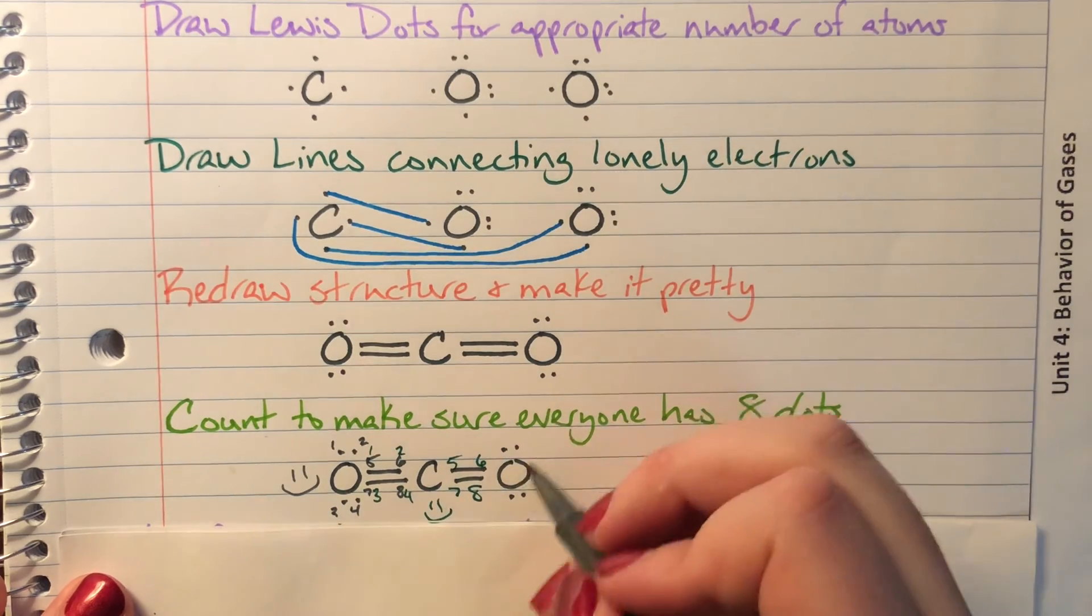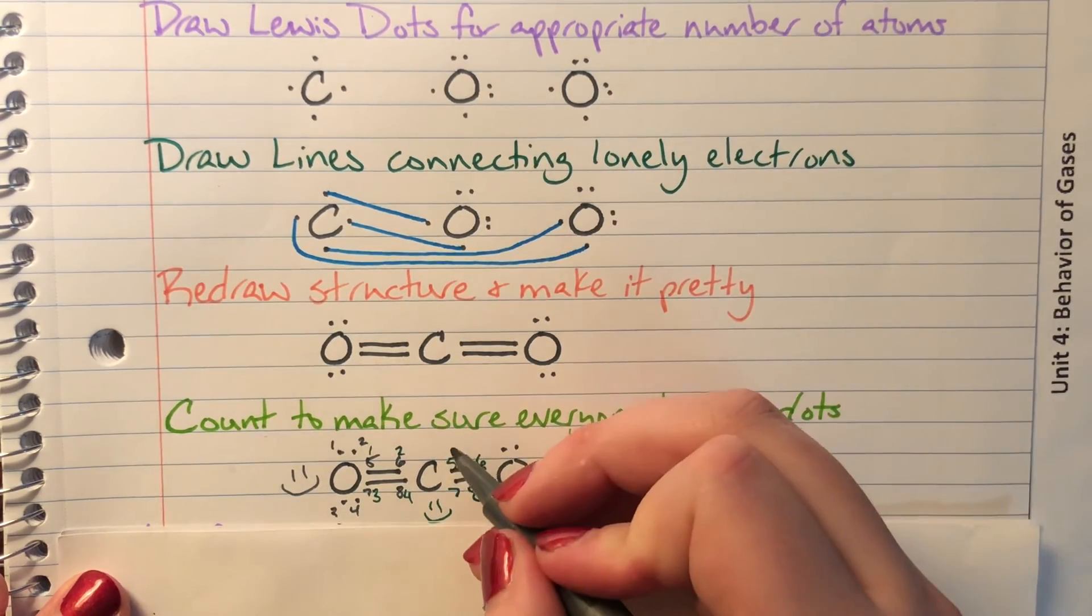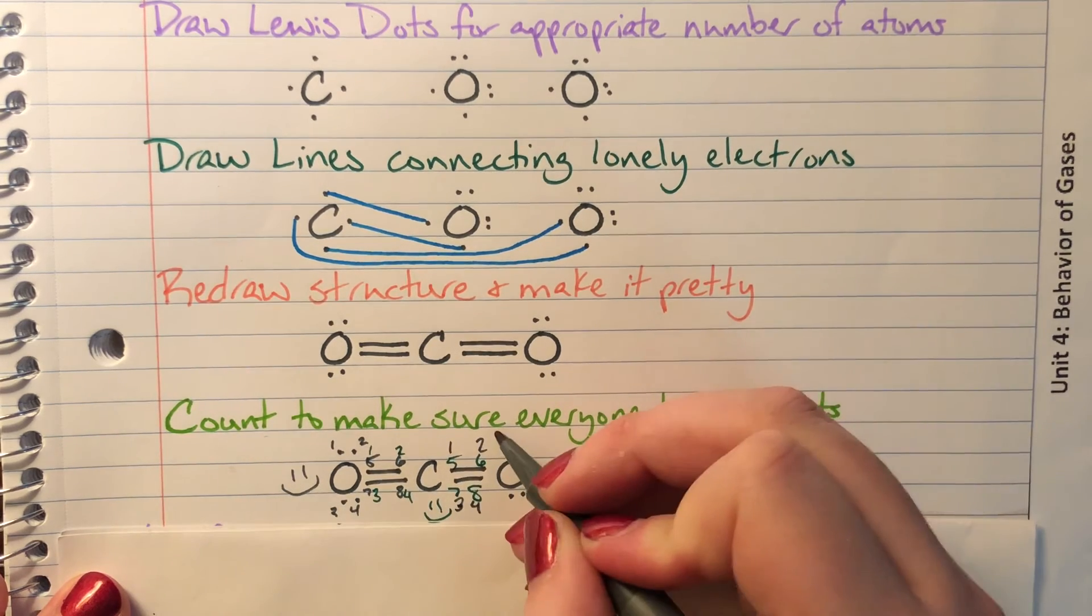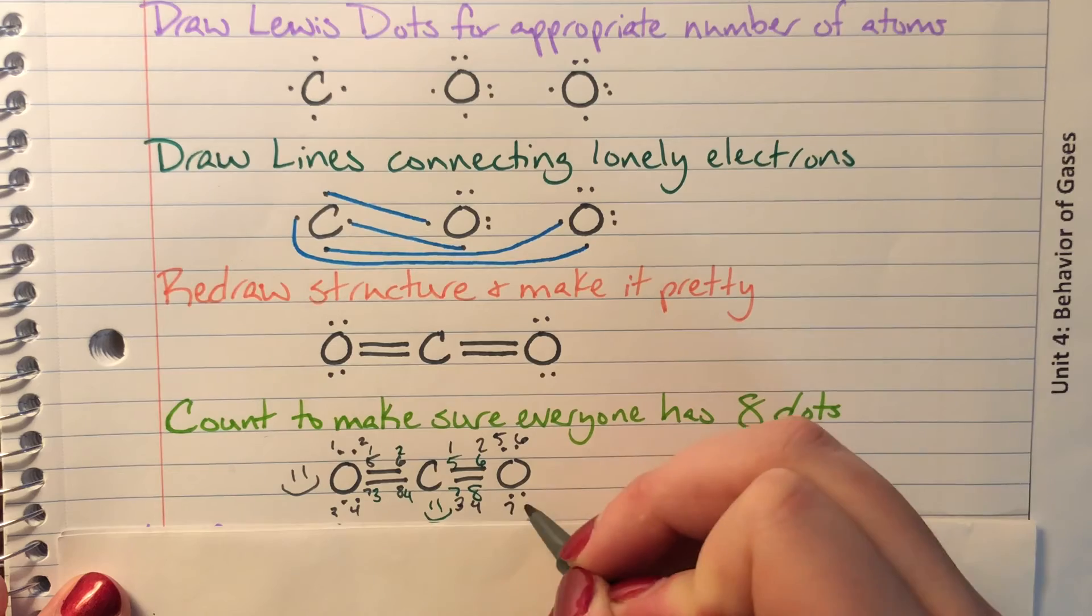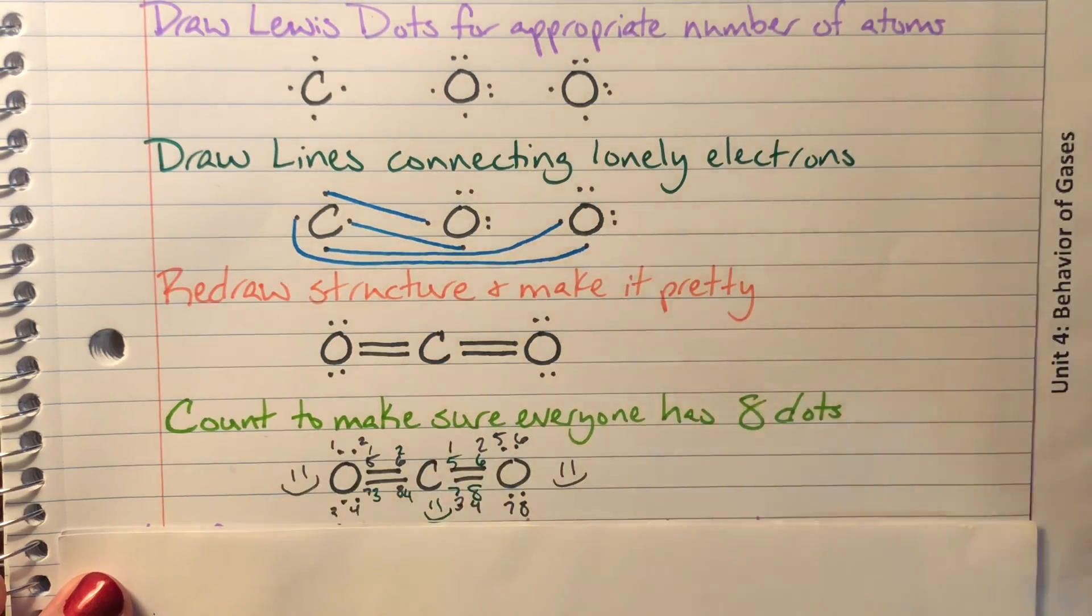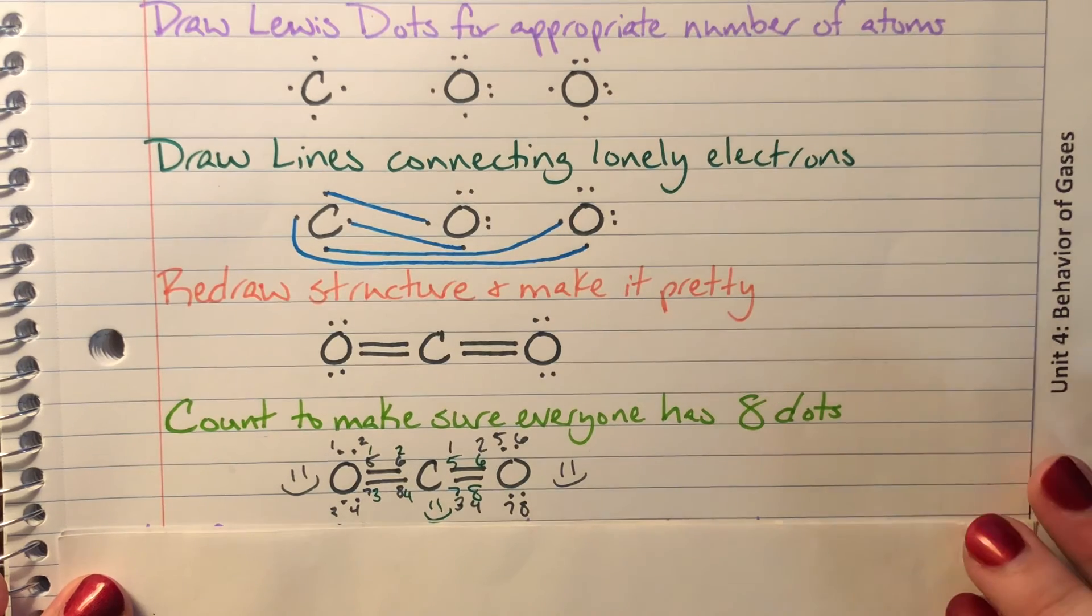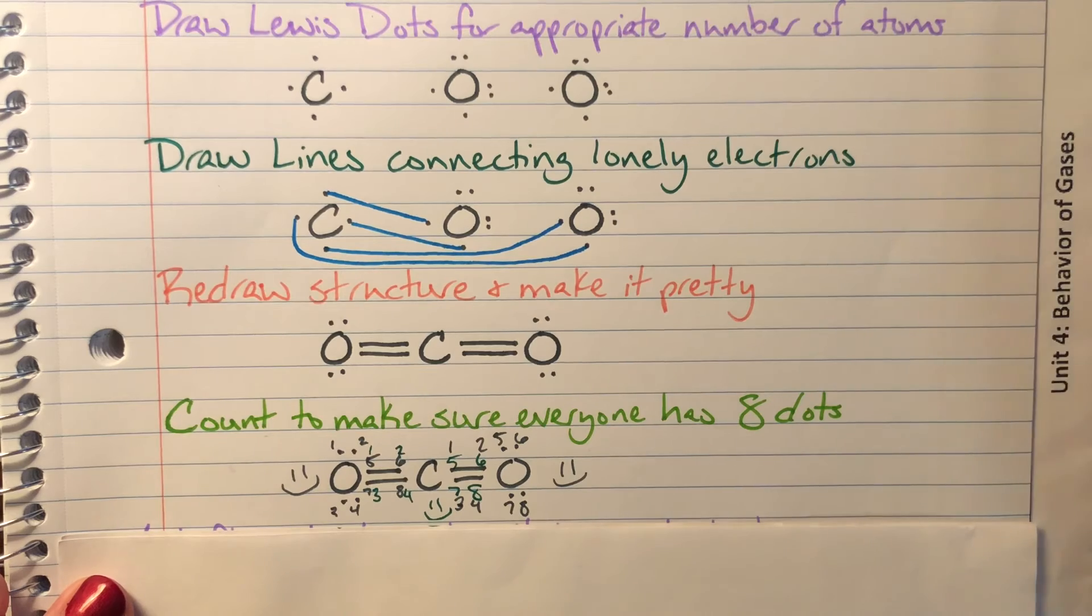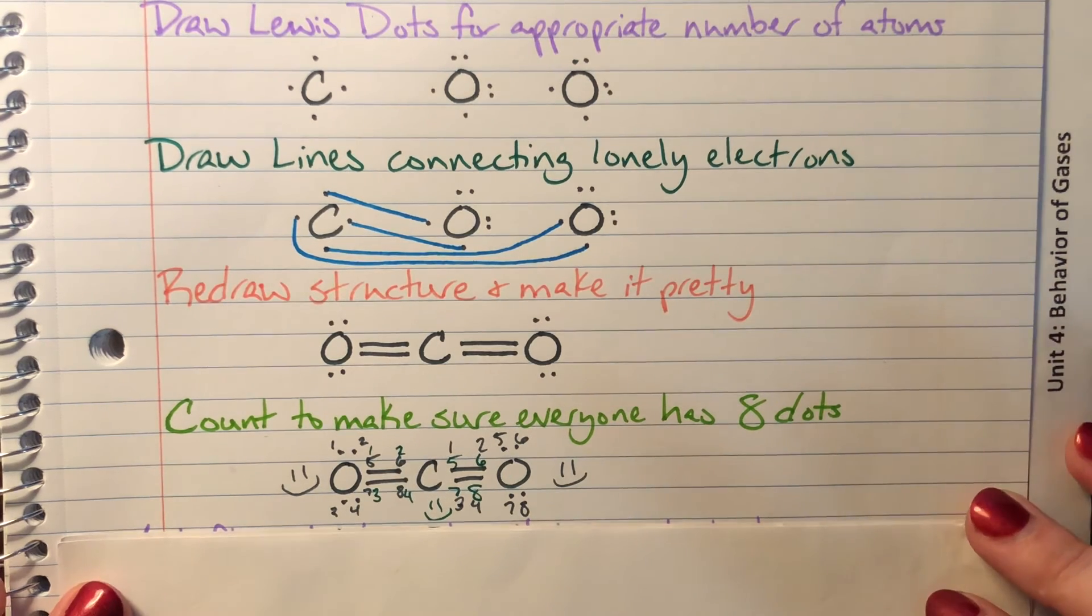And then finally we have this last oxygen who is going to have one, two, three, four, five, six, seven, eight. So this other oxygen is also happy. Since everybody has eight, we are all good and we can go ahead and say that this is the correct Lewis dot structure for carbon dioxide.